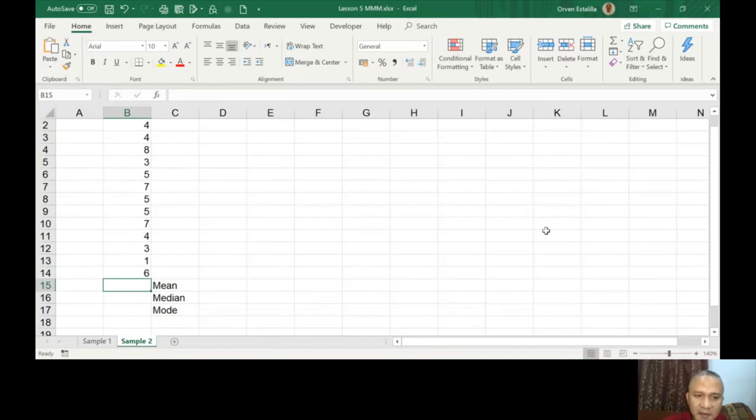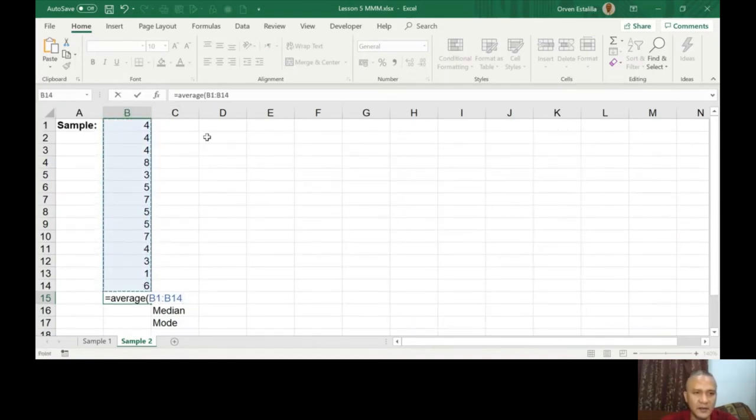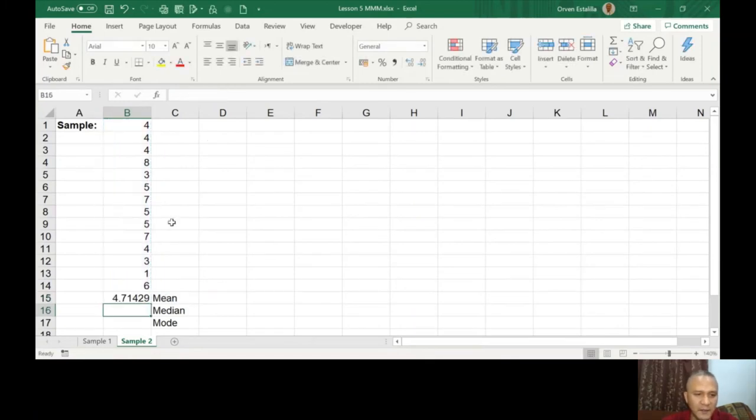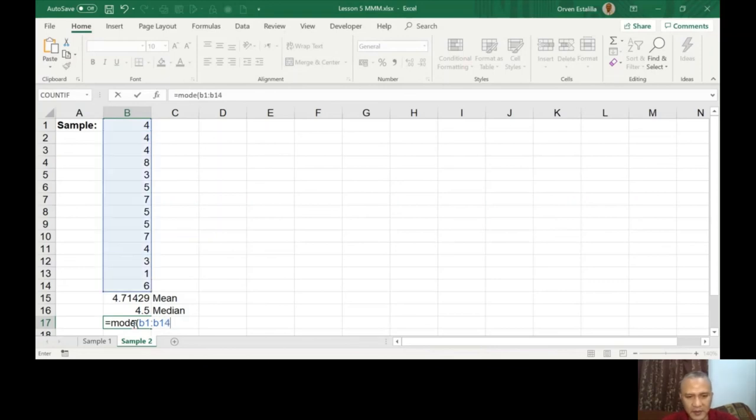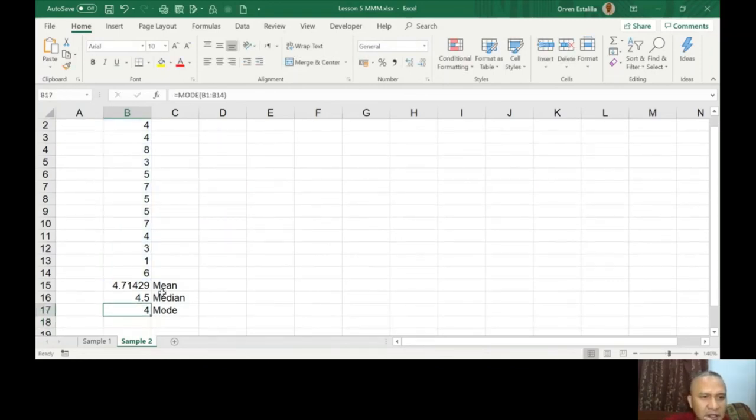Sample number two is just the same in median mode. It's just equal to average of these numbers, B1 colon B14, close parenthesis, enter. Then it's equal to mode B1 colon B14. As you can see, it's four, which is the mode.